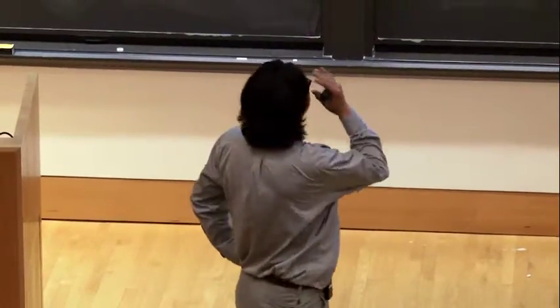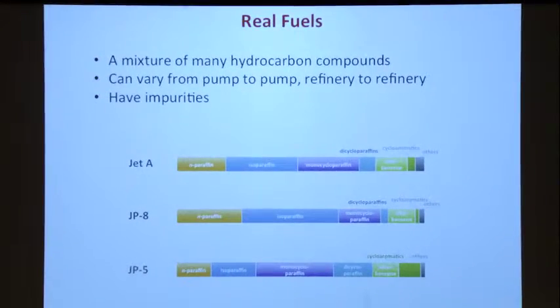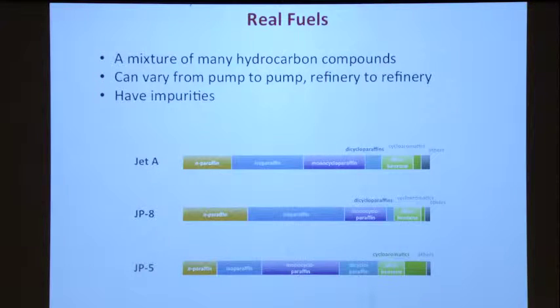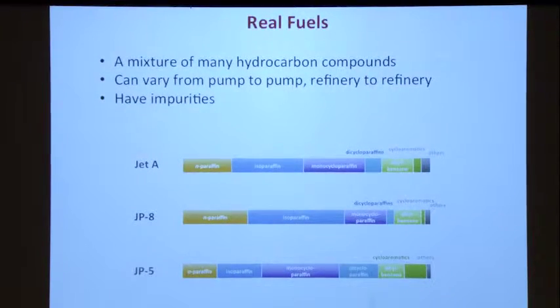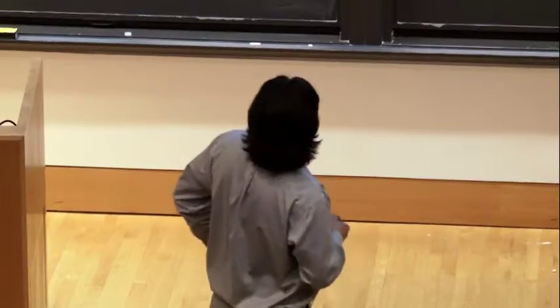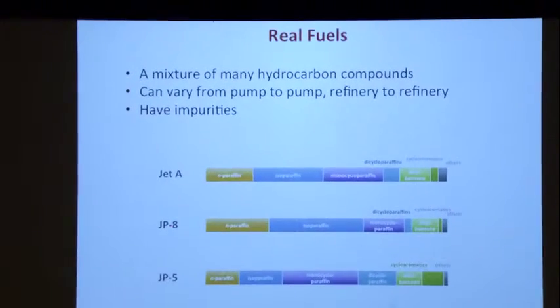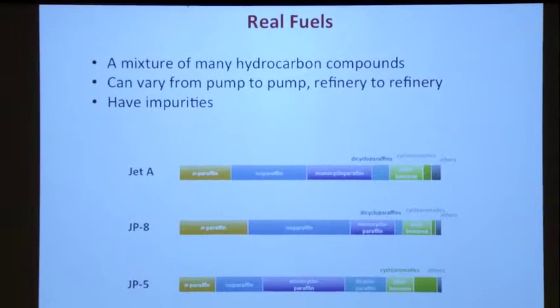And let me just use jet fuel as an example. Diesel fuel, gasoline all behave similarly. Real fuel are a mixture of many hydrocarbon compounds. It can vary from pump to pump, refinery to refinery, and have impurities. Gasoline has to be transported by pipelines, can be transported by trucks. And do you really think anyone go inside of this truck and clean the goo, the rust inside? No. It has impurities. Dominantly, there's still hydrocarbon. So you take three different types of jet fuel. Jet A is a commercial jet fuel. JP-8 is a military jet fuel. JP-5 is an old military jet fuel. They differ in composition.